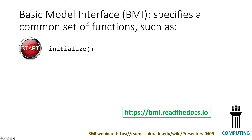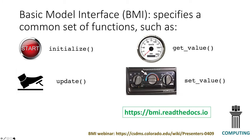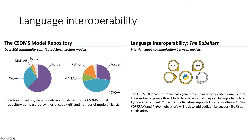The BMI functions include: initialize to start up the model and read its inputs; update to advance it in time; get_value to interrogate state variables; set_value to adjust them for coupling, data assimilation, or experimentation; and finalize for cleanup. Those are five of about 30 functions total. The second technical ingredient is language interoperability — CSDMS has developed tools that provide a Python front end as a lingua franca to execute programs written in Fortran, C, or C++ through a Python interface, with possible R support in the future.